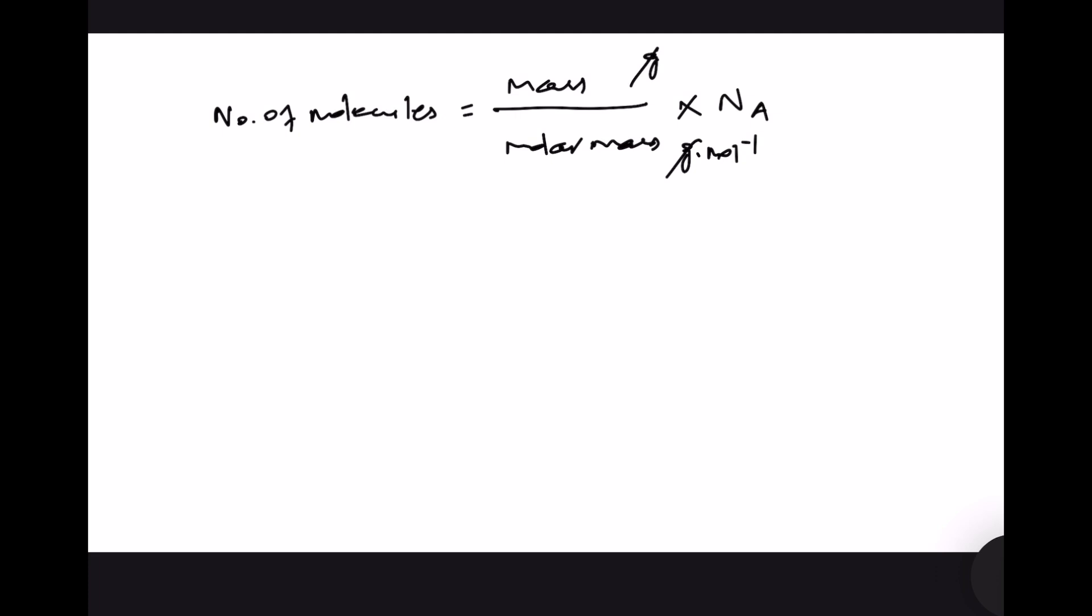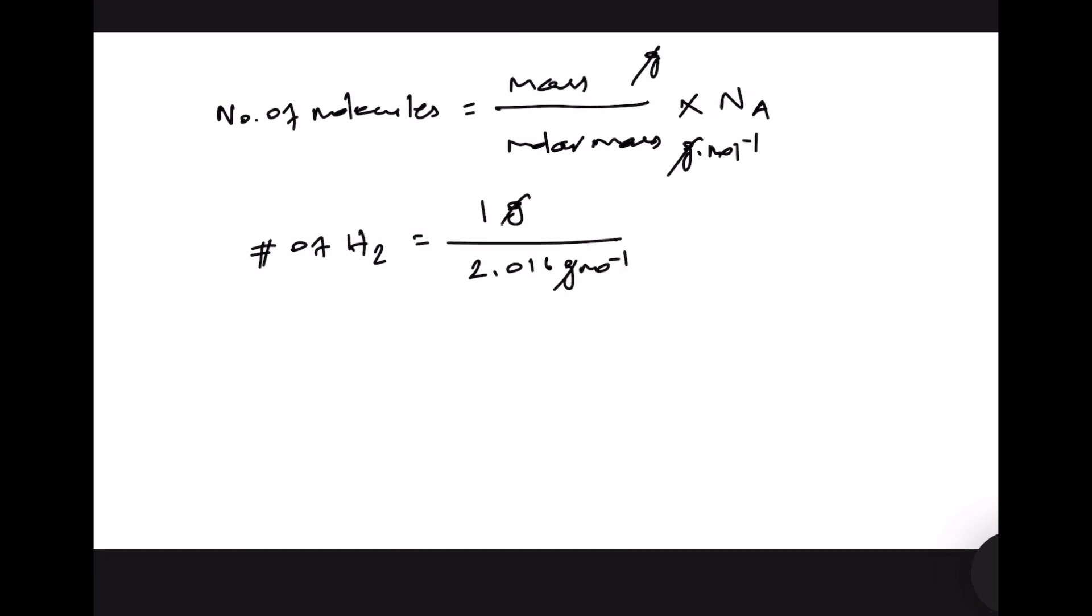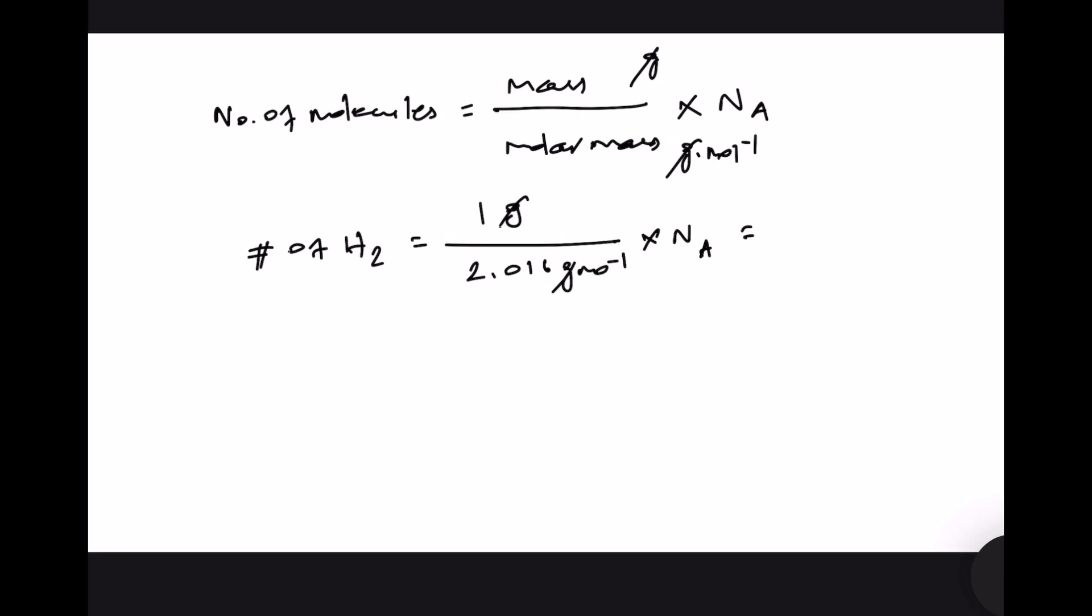For H2, the number of molecules of H2 in 1 gram is going to be 1 gram, that is the mass, and the molar mass of H2 is 2.016 grams per mole. Let us approximate the denominator as 2 because we are multiplying with the Avogadro number.